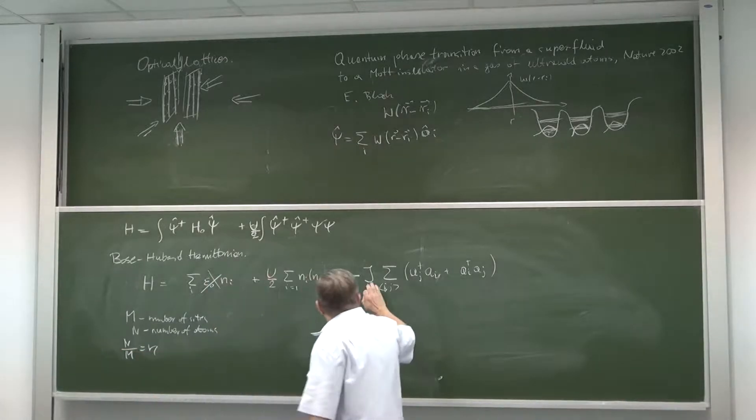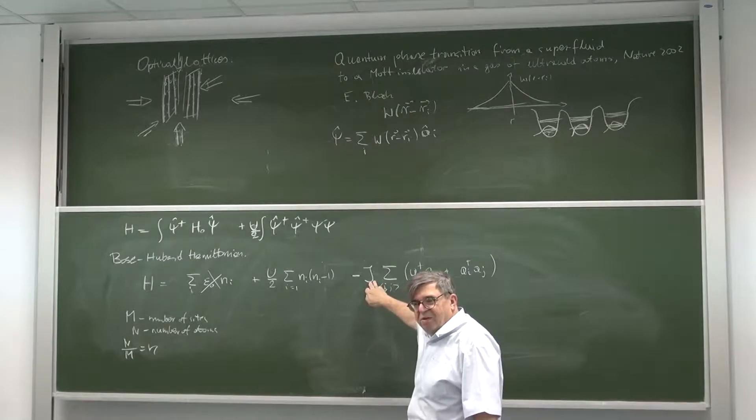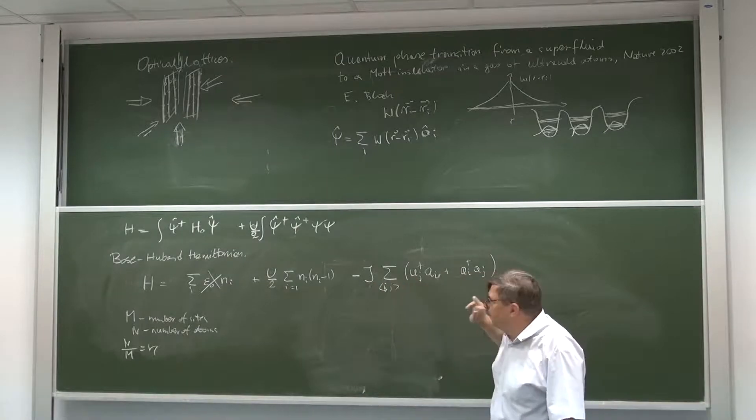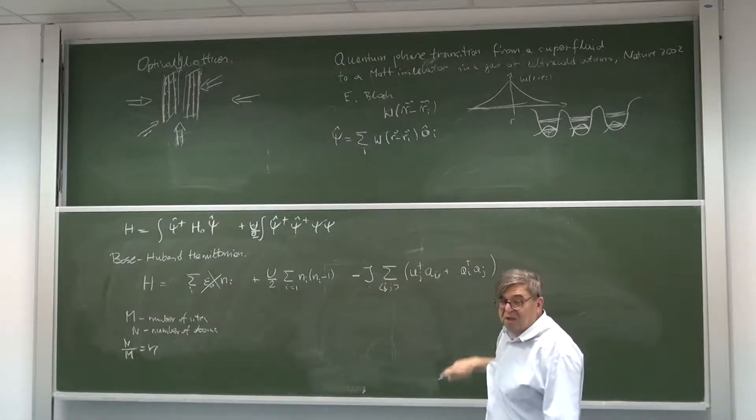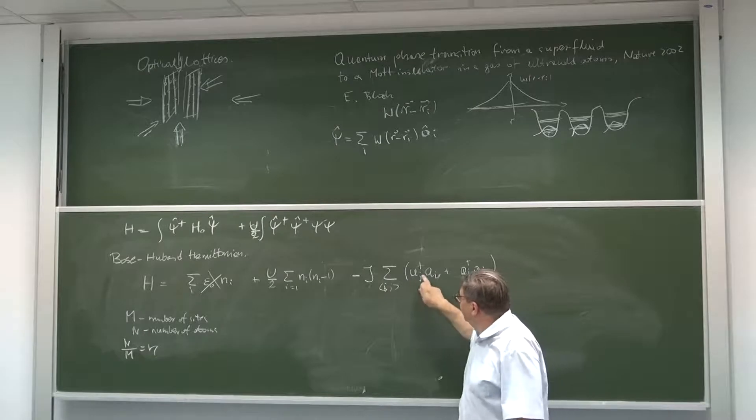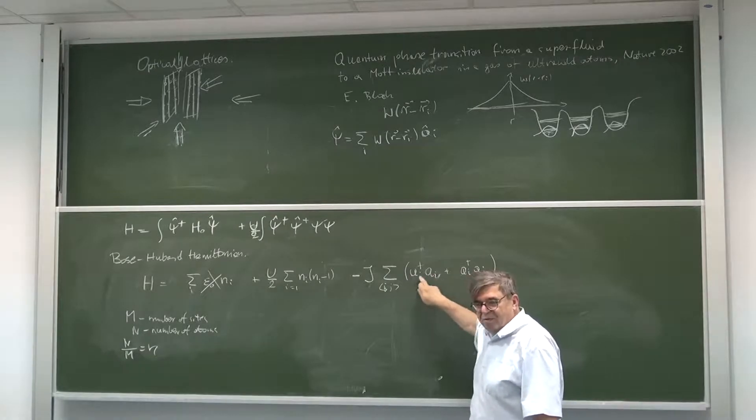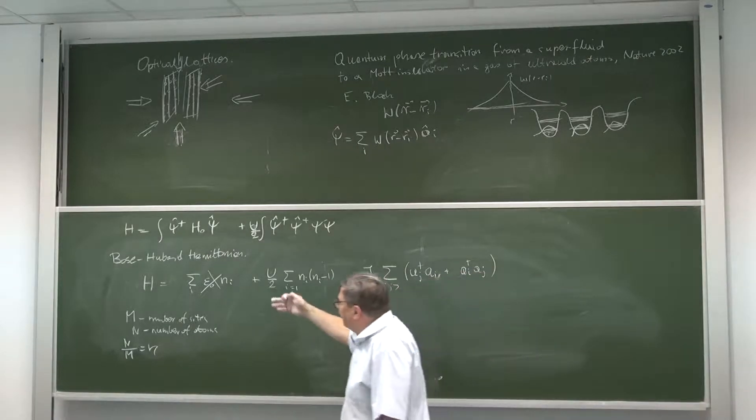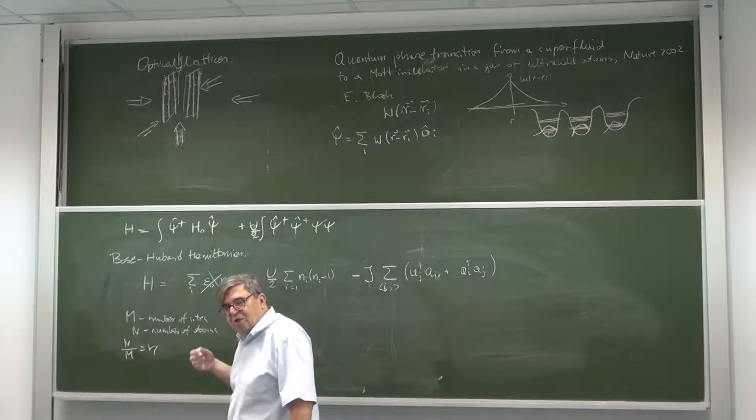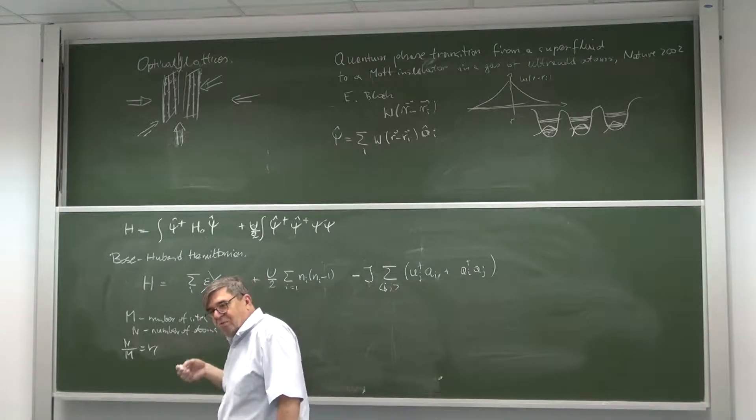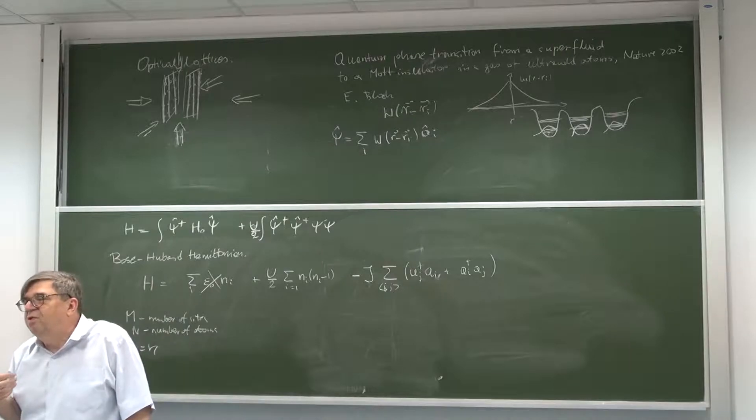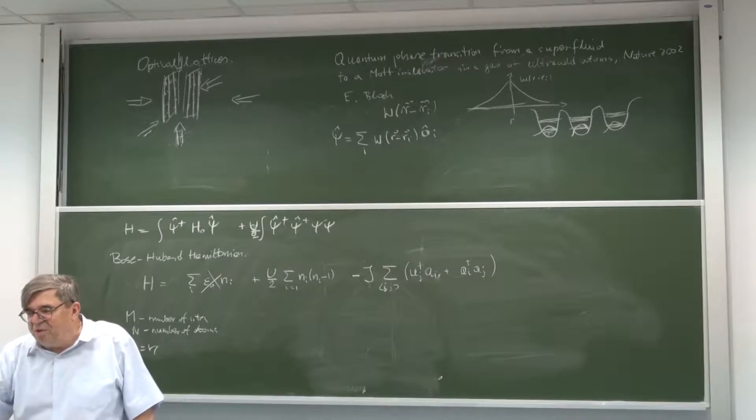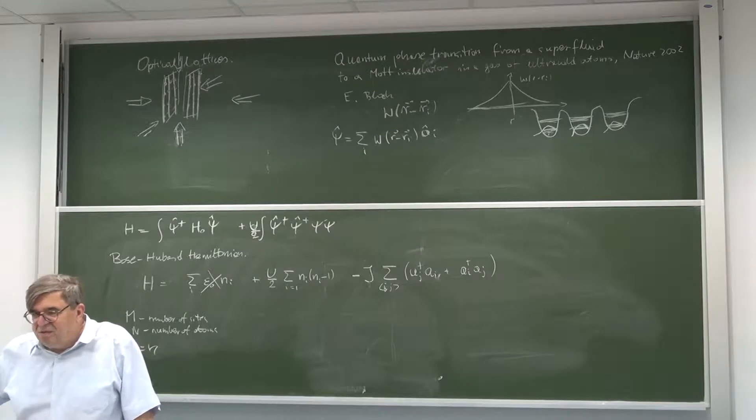So if this energy dominates, the atoms sit in the lattice sites, they evenly distribute them on each site and they don't jump because this is the minimum energy. In the opposite case when J dominates, there is a large contribution to the energy which is negative. When this gives a big contribution, we decrease the energy. In the first case we have a Mott state, insulating state, which is possible only with integer number, integer occupations. Because if there is no integer, there are always some atoms which are left which jump.